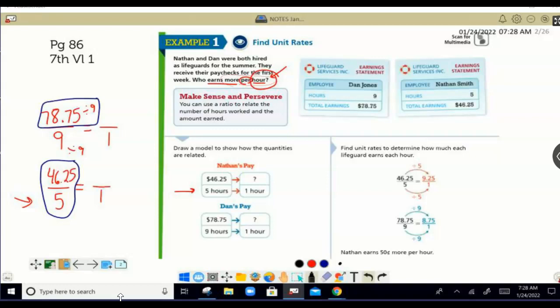We did 78.75 divided by nine, which is exactly what we see in our ratio, 78.75 divided by nine. So that is our process, our general process of finding a unit rate.